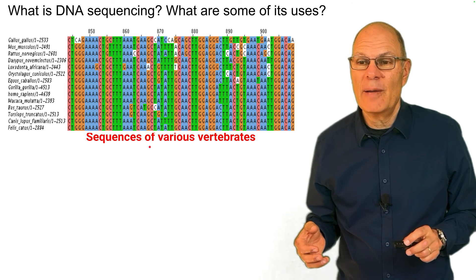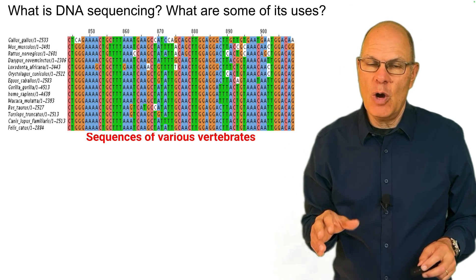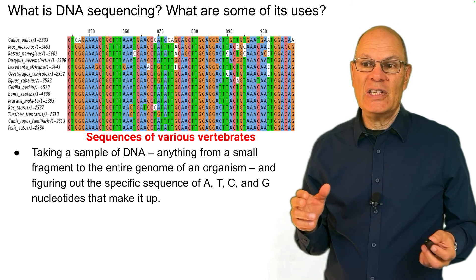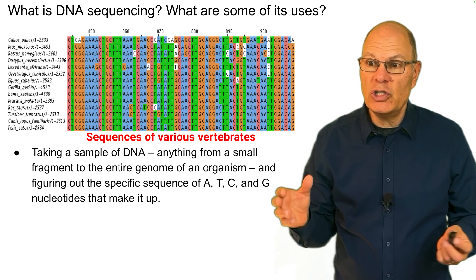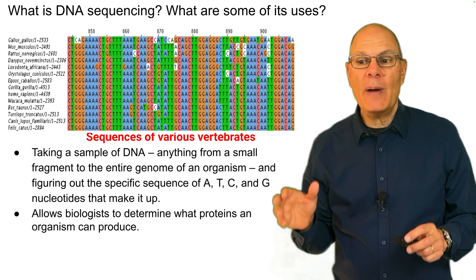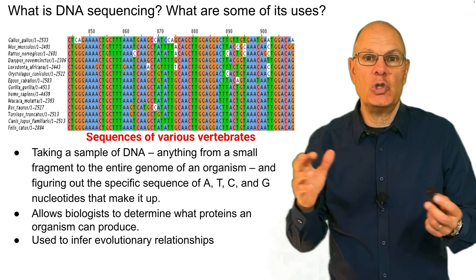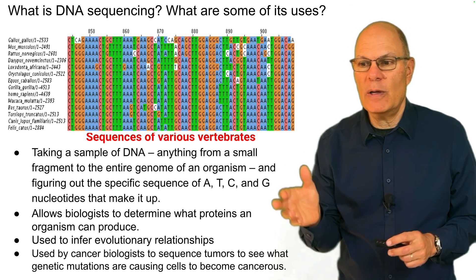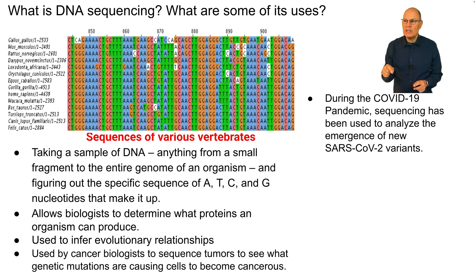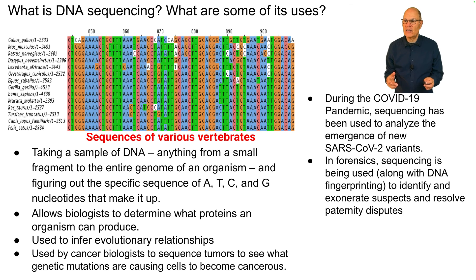What is DNA sequencing and what are some of its uses? DNA sequencing involves taking a sample of DNA — from a small fragment to an entire genome — and determining the specific sequence of A, T, C, and G nucleotides. It allows biologists to determine what proteins an organism can produce, infer evolutionary relationships, and helps cancer biologists sequence tumors to identify mutations causing cancerous growth. During the COVID-19 pandemic, sequencing was used to analyze new SARS-CoV-2 variants and create the vaccine. In forensics, sequencing is used alongside DNA fingerprinting to identify suspects, exonerate the innocent, and resolve paternity disputes.